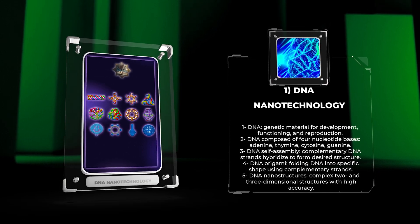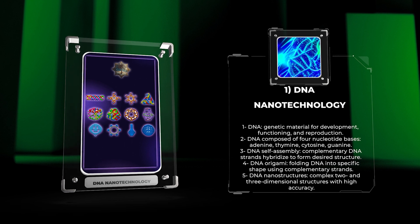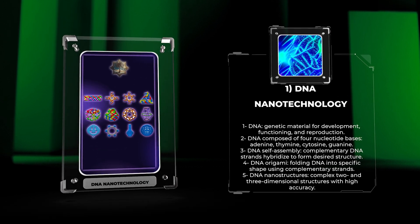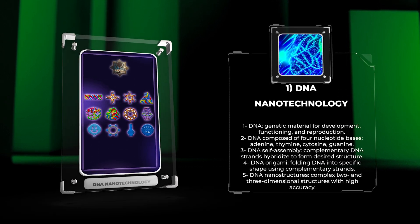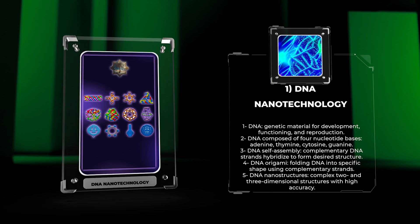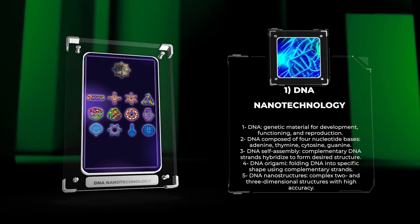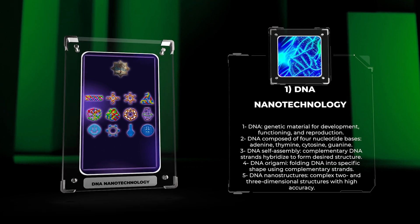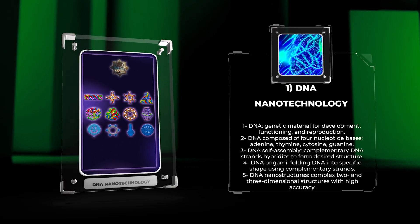Cytosine (C), and guanine (G). Harnessing the unique properties of DNA, scientists have devised methods to utilize its structural capabilities for engineering nanostructures with high precision. These DNA nanostructures can be created through a process called DNA self-assembly, where complementary DNA strands hybridize to form a desired structure.